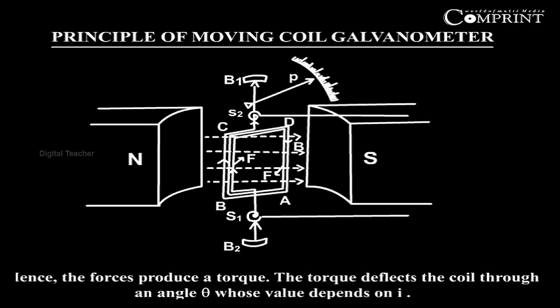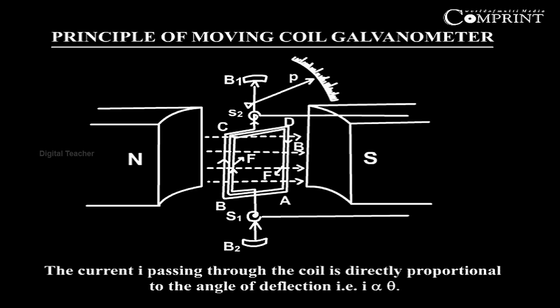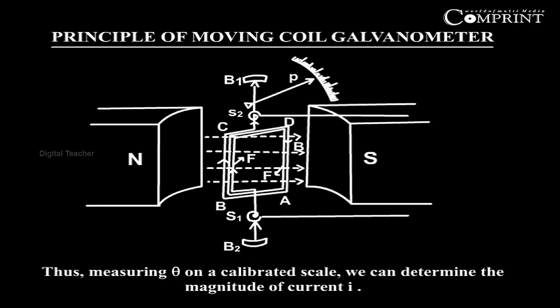Hence, the forces produce a torque. The torque deflects the coil through an angle theta whose value depends on I. The current I passing through the coil is directly proportional to the angle of deflection. That is, I is proportional to theta. Thus, measuring theta on a calibrated scale, we can determine the magnitude of current I.